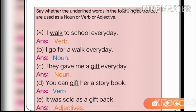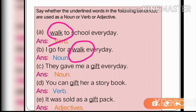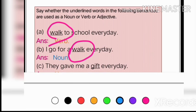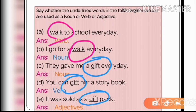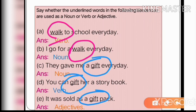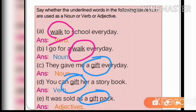In this way you can understand the function of a word and write down the answers. The word 'gift' appears in all three sentences — the spelling is the same, the pronunciation is the same, but their function is different. In the first sentence it functions as a noun, in the second as a verb, and in the third as an adjective. It depends on the context of the sentence.